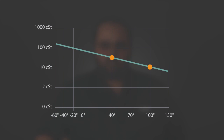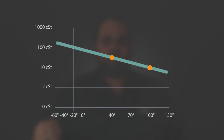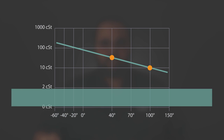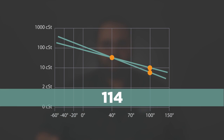The relationship between the viscosity at 40 degrees and 100 degrees is known as the viscosity index. The higher the viscosity index, the less change there is in viscosity between the two temperatures. So a high viscosity index fluid will not thin out as much as a lower viscosity index fluid.